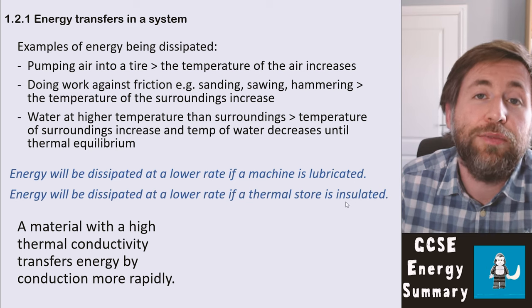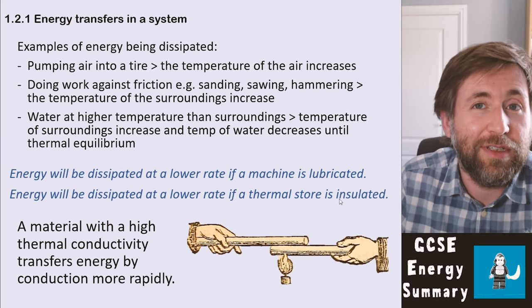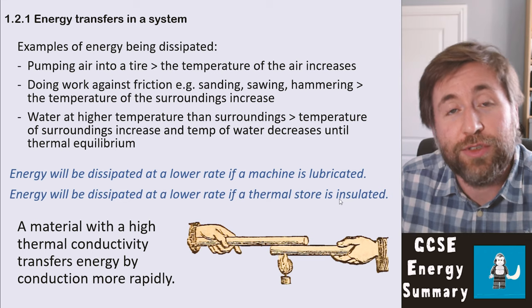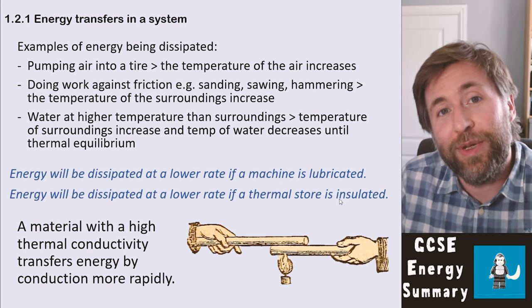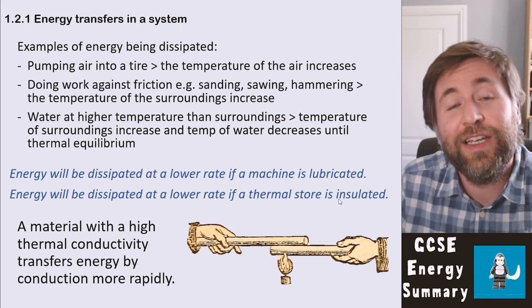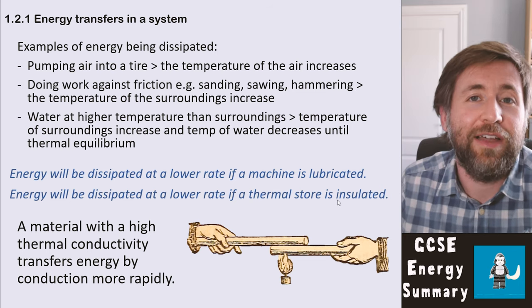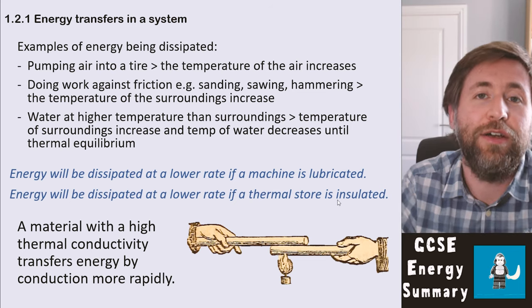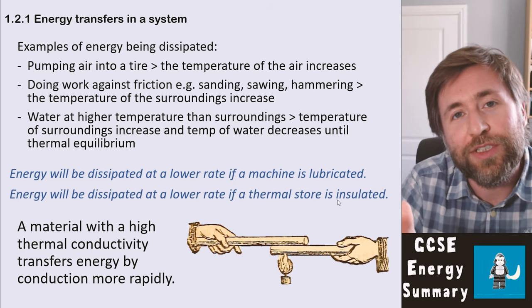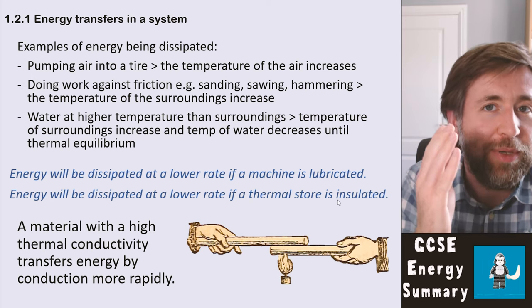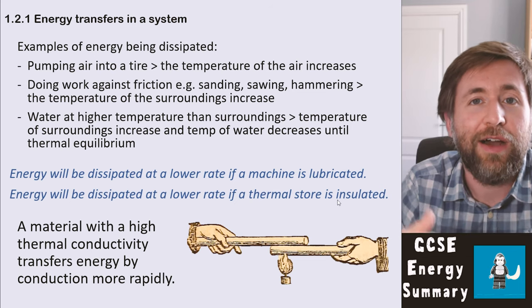Whilst talking about dissipation of heat, we're talking about thermal conductivity. A material with a high thermal conductivity transfers energy by conduction more rapidly. A demonstration using pins on rods can show that one metal transfers heat at a higher rate than another, and metals transfer heat at a higher rate than wood — meaning metals have a higher thermal conductivity. At GCSE level, rather than saying something is a conductor or an insulator, the preferred language is that one material has a higher conductivity than another, acknowledging that nothing is completely one or the other — there is a scale of conductivity.